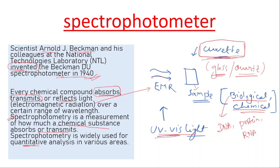So we have to absorb the chemical and transmit and reflect light. Spectrophotometry tells us which chemical sample we have to use with light and how much we have to absorb it.